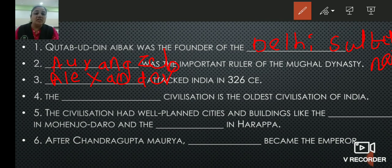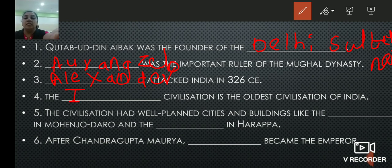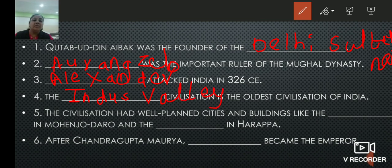Fourth: the blank civilization is the oldest civilization of India. Which is the oldest civilization of India? The answer is Indus Valley. The Indus Valley civilization is the oldest civilization of India.